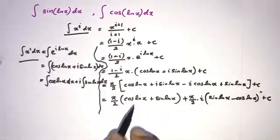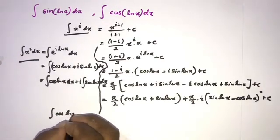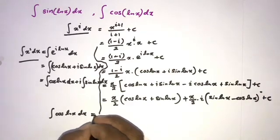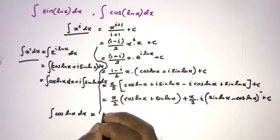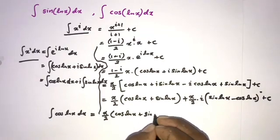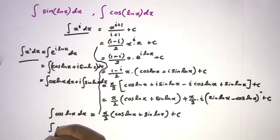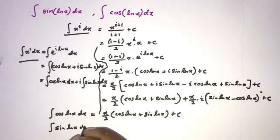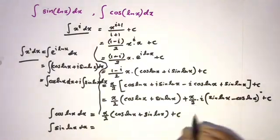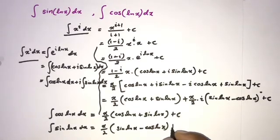Both expressions represent the same integral, so we match real and imaginary parts. The real part gives: ∫cos(ln x) dx = x over 2 times (cosine of natural log of x plus sine of natural log of x) plus c. The imaginary part gives: ∫sin(ln x) dx = x over 2 times (sine of natural log of x minus cosine of natural log of x) plus c.